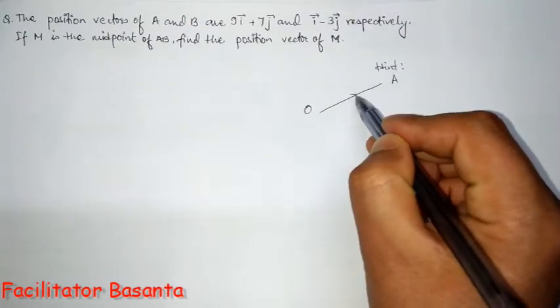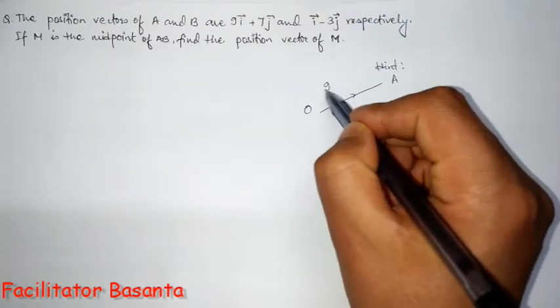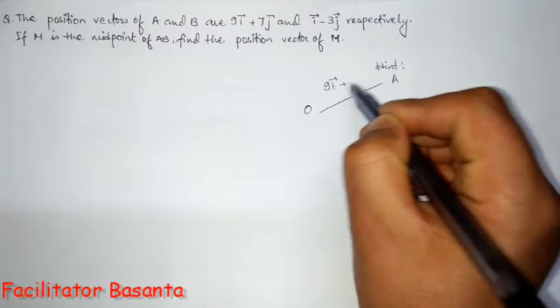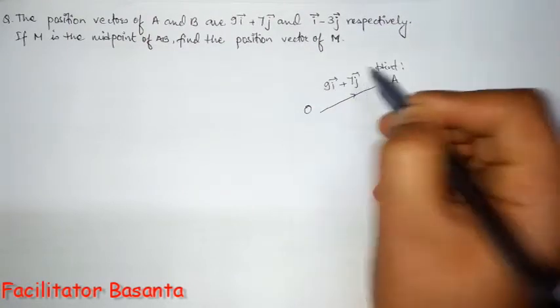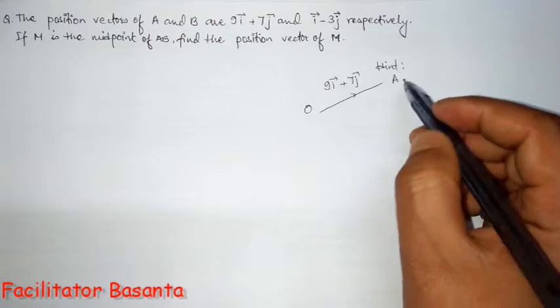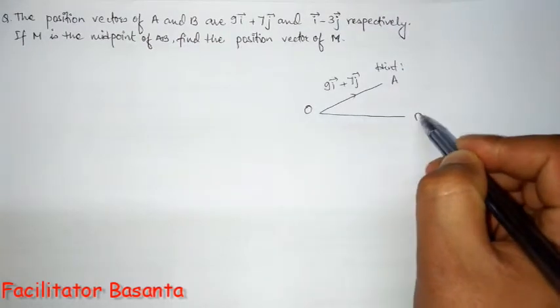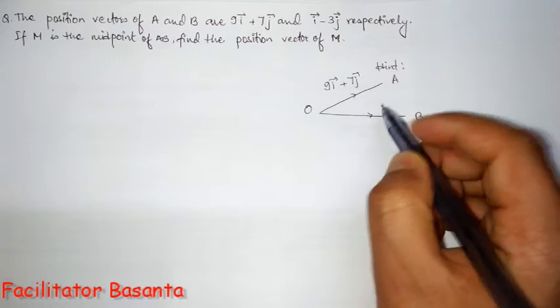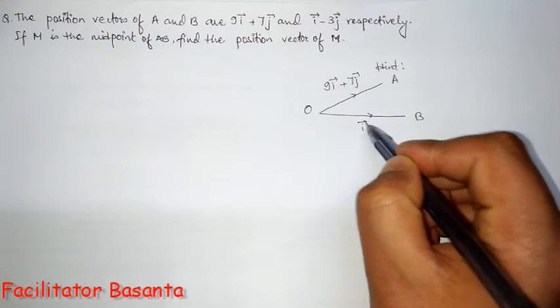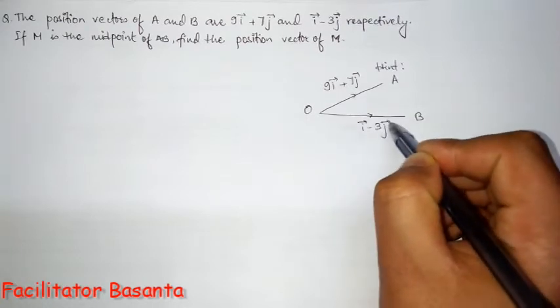For point A, it's 9i plus 7j. And there is another point, B. Its position vector is i vector minus 3j vector.